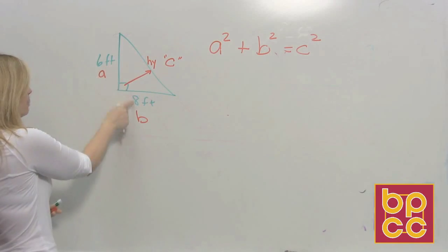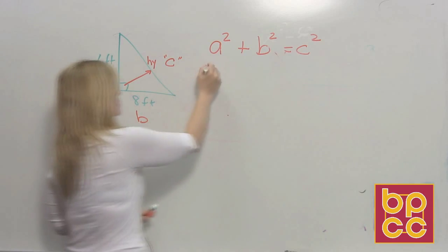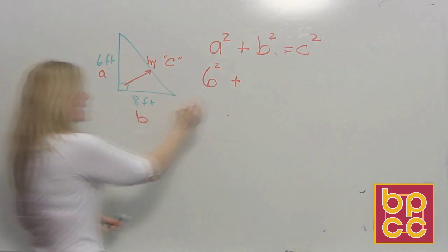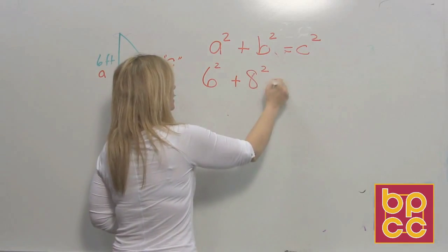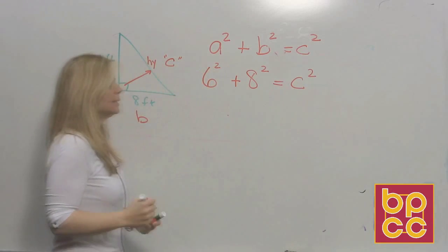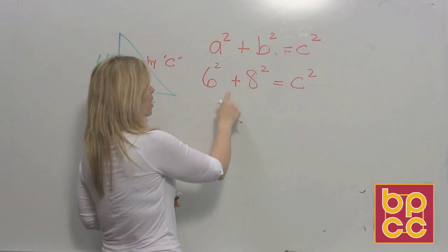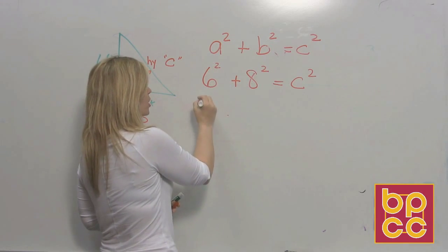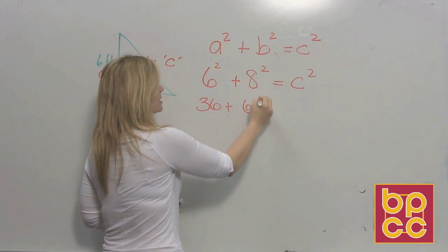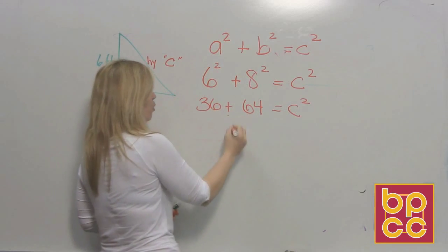Now, because we have numbers, we can substitute them in. A is 6. B is 8. And C I do not know, so I leave it there. Now, we're going to use our arithmetic skills and our algebra skills. We know order of operations we have to square first. So 6 times 6 is 36. 8 times 8 is 64. 36 plus 64 is 100.